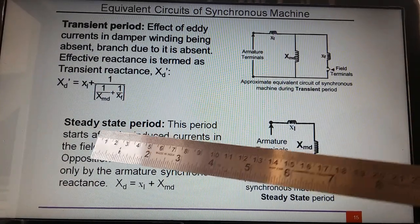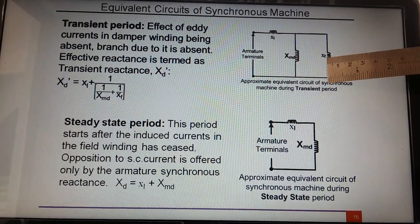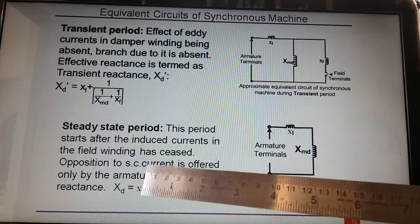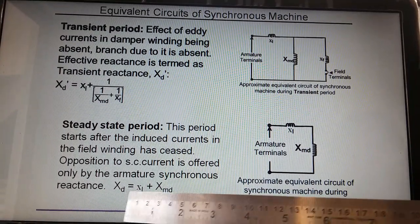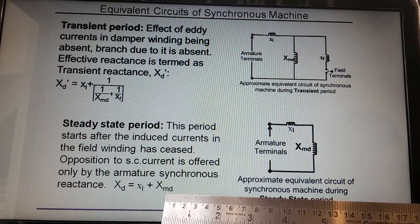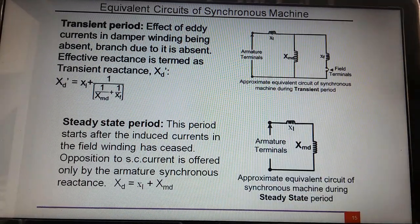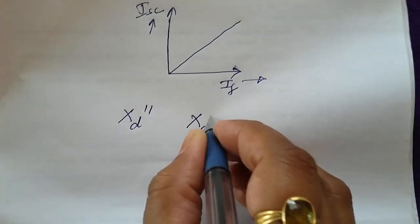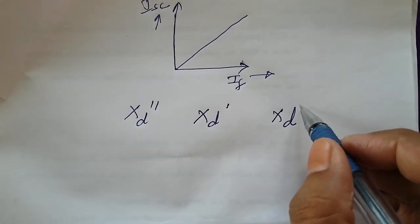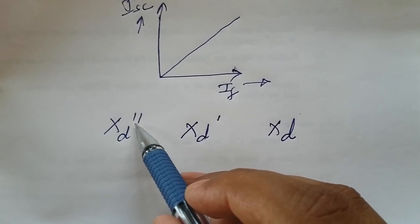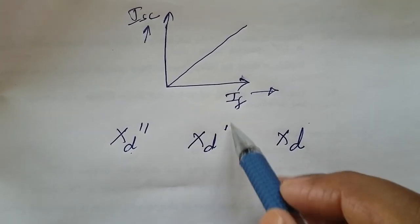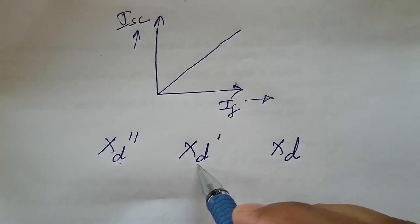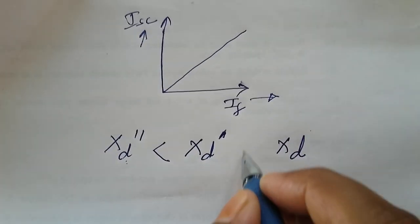The last state is the steady state period, where the time constant of the field winding is small so it also dies out. In that equivalent circuit, there is no field winding — only armature reactance is present. The opposition offered to short circuit current is only the armature synchronous reactance XD, that is XL plus XMD, where XMD is also termed XAD. Looking at all three reactances, XD is greater than XD' because XD'' has three reactances in parallel making the net reactance less. So XD'' < XD' < XD.